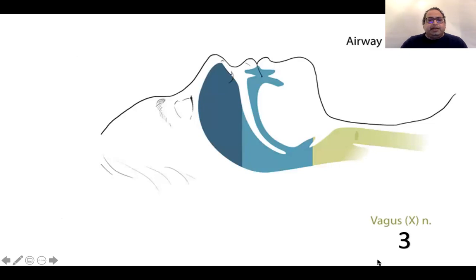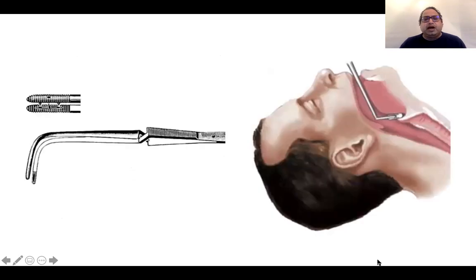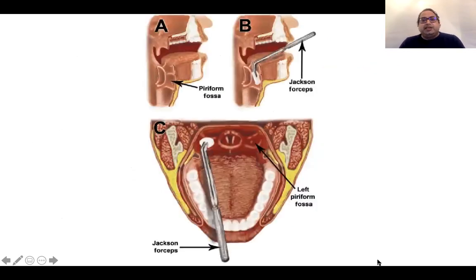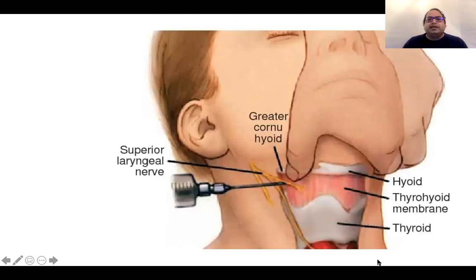For the vagus nerve, there is a lot written about how to block the superior laryngeal nerve — its internal laryngeal branch — and the recurrent laryngeal nerve. Jackson-Cross forceps are used to apply a cotton pledget soaked in lidocaine, kept in the pyriform fossa on both sides to block the internal laryngeal nerve. Alternatively, you can hit the greater cornu of the hyoid bone and just walk off it, or go one centimetre medially and pierce the thyrohyoid membrane to inject local anaesthetic.